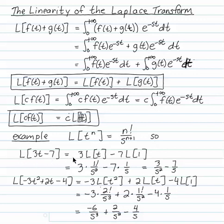Laplace transform of 3t minus 7 is 3 times the Laplace transform of t minus 7 times the Laplace transform of 1. Those transforms are 1 factorial over s squared and 1 over s, so 3 times 1 over s squared is 3 over s squared, 7 times 1 over s is 7 over s. That's the transform of 3t minus 7.